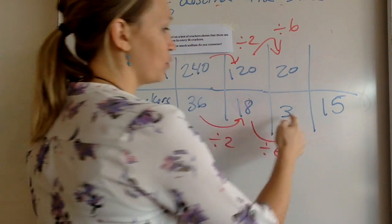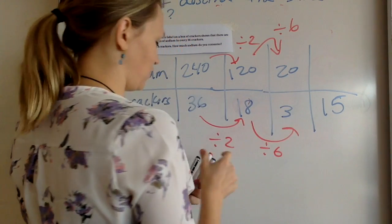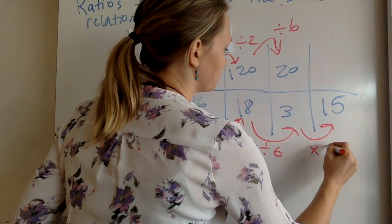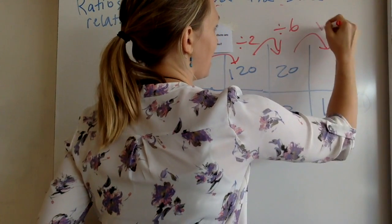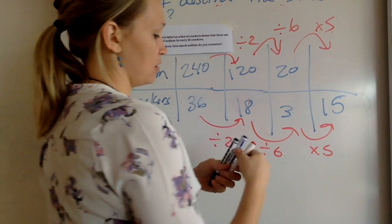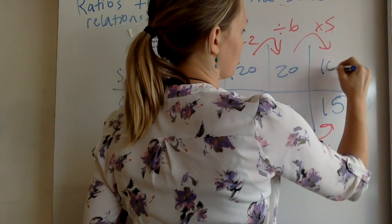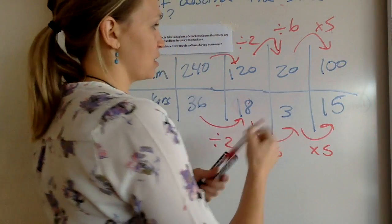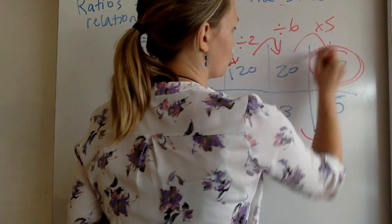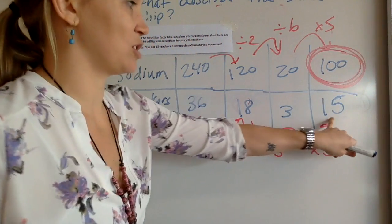All right, now we can see the relationship between three and 15 is multiplying by five. So then we multiply the top by five as well to get 20 times five is 100. All right. So there's what the question's asking. How much sodium would you consume if you ate just 15 crackers?